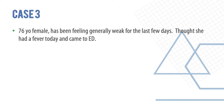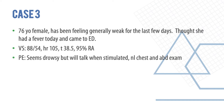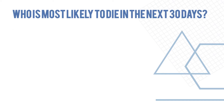Case 3 is a 76-year-old female who has been generally weak for the last few days. She had a fever today and came to the emergency department. Vital signs are blood pressure 88/50, heart rate 105, temperature elevated, and 95% saturation on room air. This patient looks drowsy but will talk when stimulated, and the chest and abdominal exam are normal.